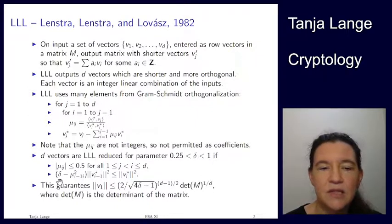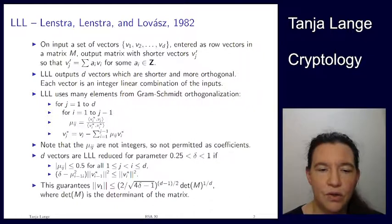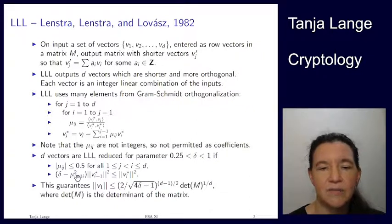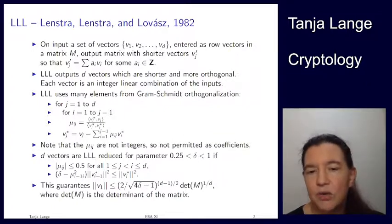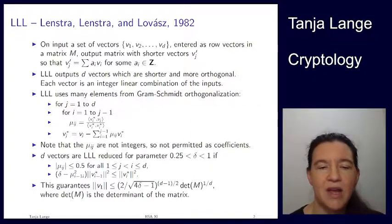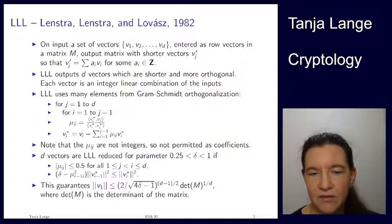The condition involves v_{i-1}* being less than v_i* scaled by delta minus the mu_{i-1,i} coefficient squared. We normally run this with delta = 1/2, so you have 1/2 minus the coefficient of this term being less than the next vector's length.